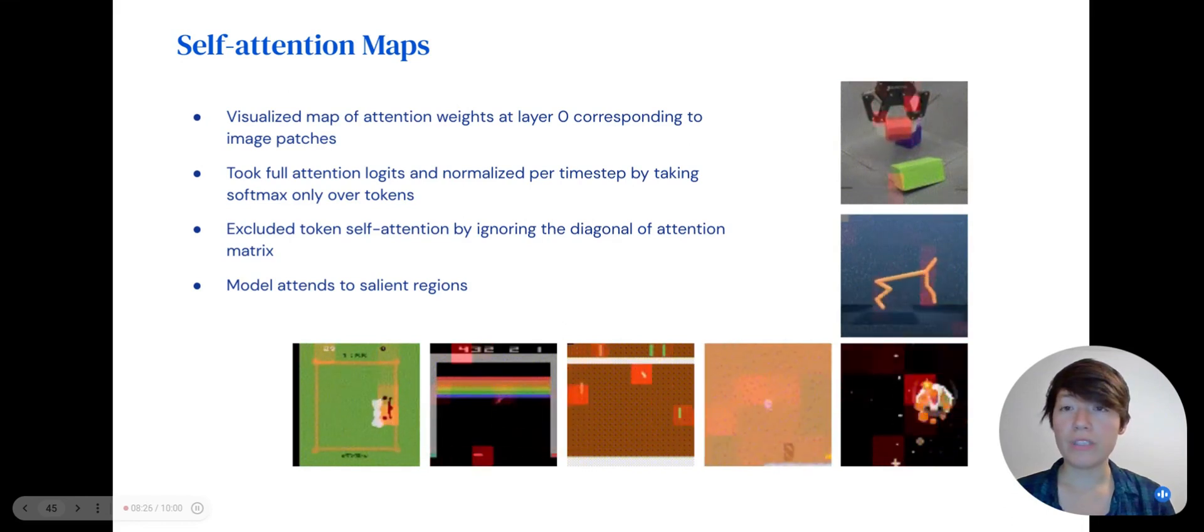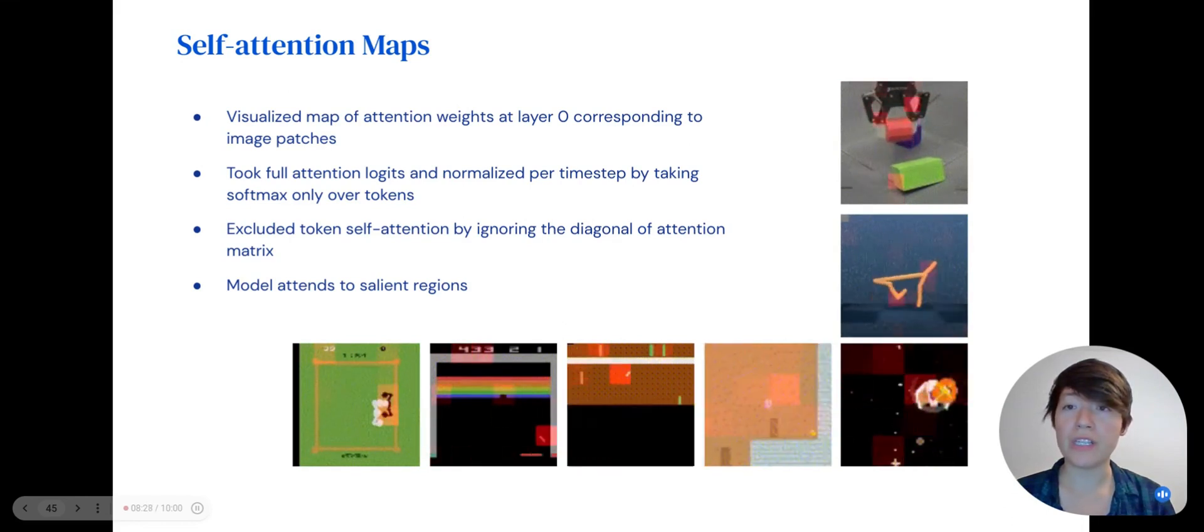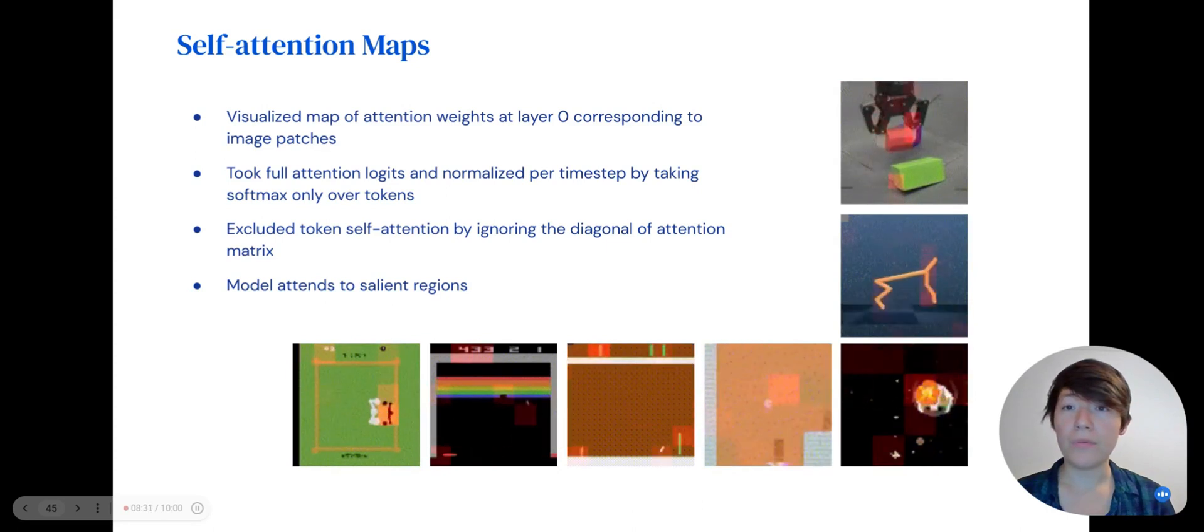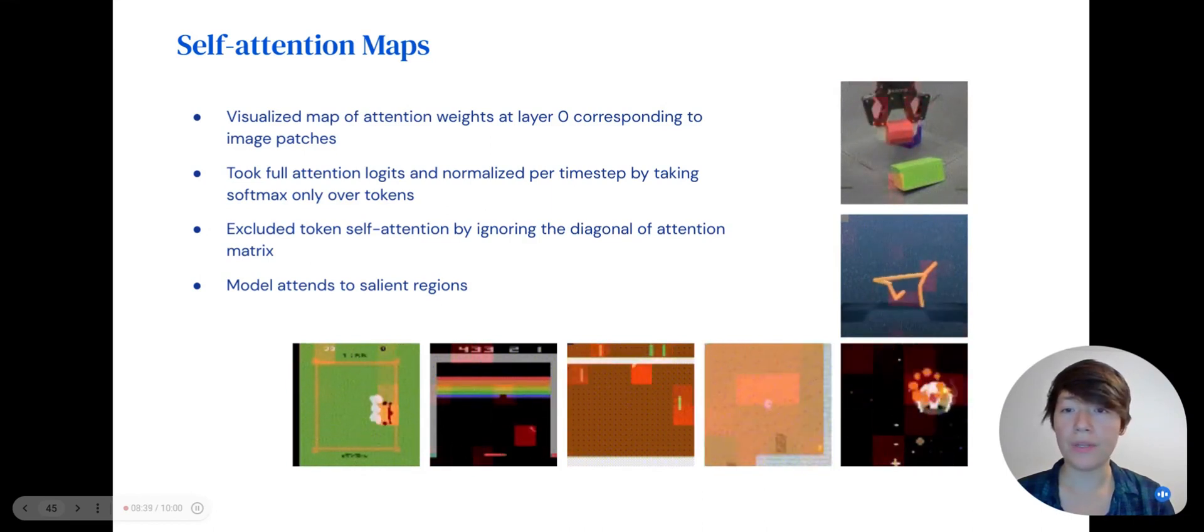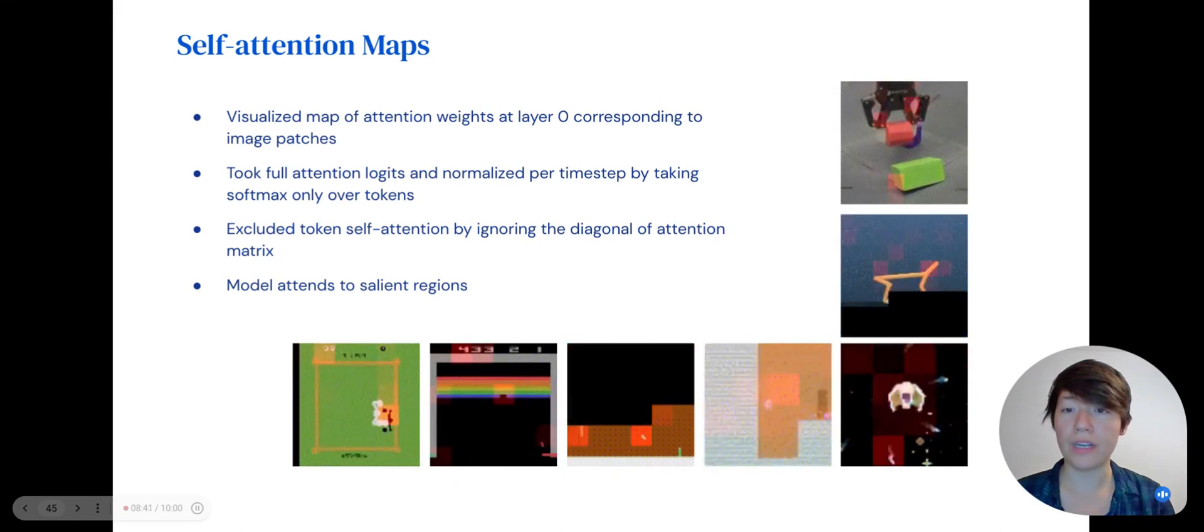Attention visualization could be useful for diagnosing generalization issues. For example, why does the robot attend to the green block when it's not relevant to the task, which is to stack red on blue? Or why in boxing does it not appear to attend at all to one of the characters?